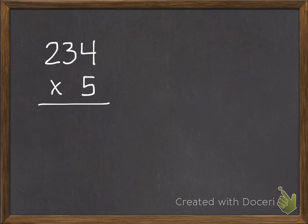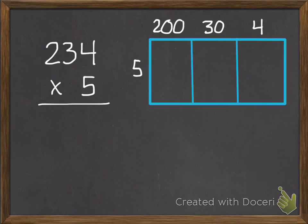For this first example I am going to use an area model, but instead of two parts of this rectangle there's going to be three, because we have hundreds, tens, and ones. So I broke my 234 apart into 200, 30, and 4. We do the same thing. We multiply our ones first, five times four, which is 20.